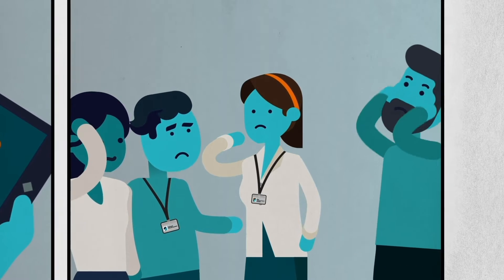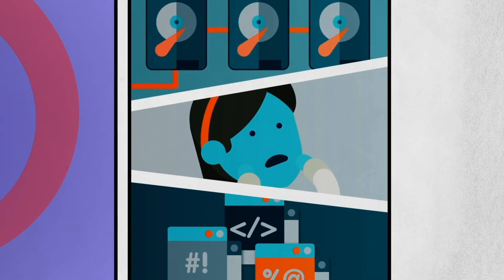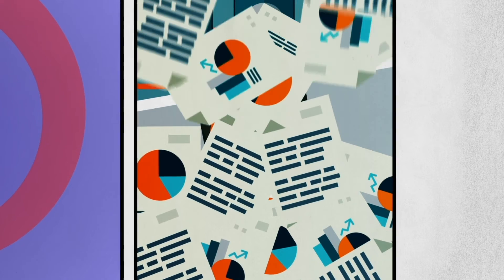There are so many different types: inspection data, design drawings, and it's spread across network drives using different software. And some of it's even on paper.